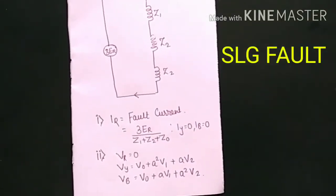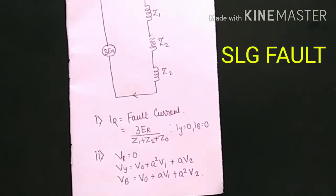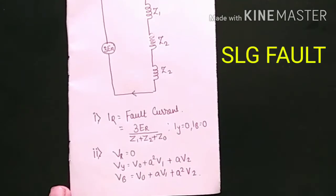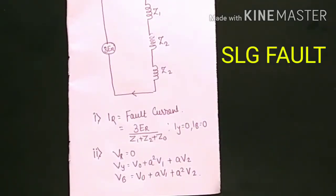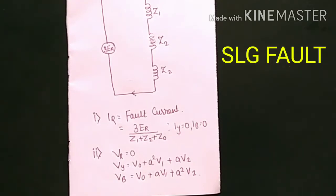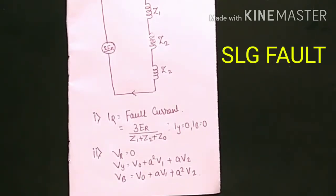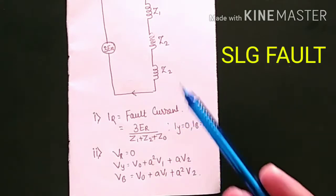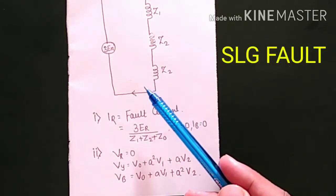Today we will see the summary of the single line to ground fault, line to line fault, and double line to ground fault — which formulas are to be written for solving numerical problems based on line to line, line to ground, and double line to ground. This is the diagram of the single line to ground fault.